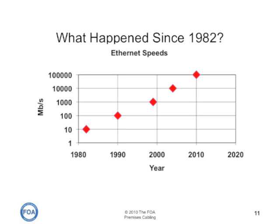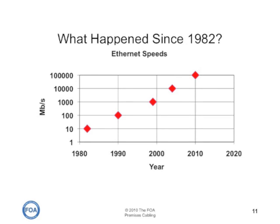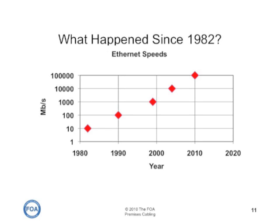One of the driving forces for changes in premises cabling has been the growth of speeds in Ethernet, the protocol used for most networks on premises cabling. In 1982, when AT&T did their survey, Ethernet was barely running at 10 megabits per second over coax cable. Today, it runs 100 gigabits per second over fiber optic cable, and that has caused major changes in the premises cabling standards.